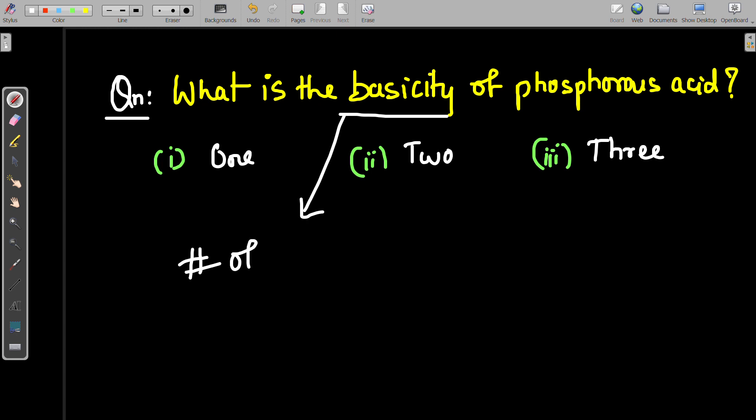The meaning of basicity is the number of replaceable, which is also known as ionizable, hydrogen atoms per molecule. It is not the total number of hydrogen atoms present per molecule, it is the number of replaceable or ionizable hydrogen atoms per molecule.